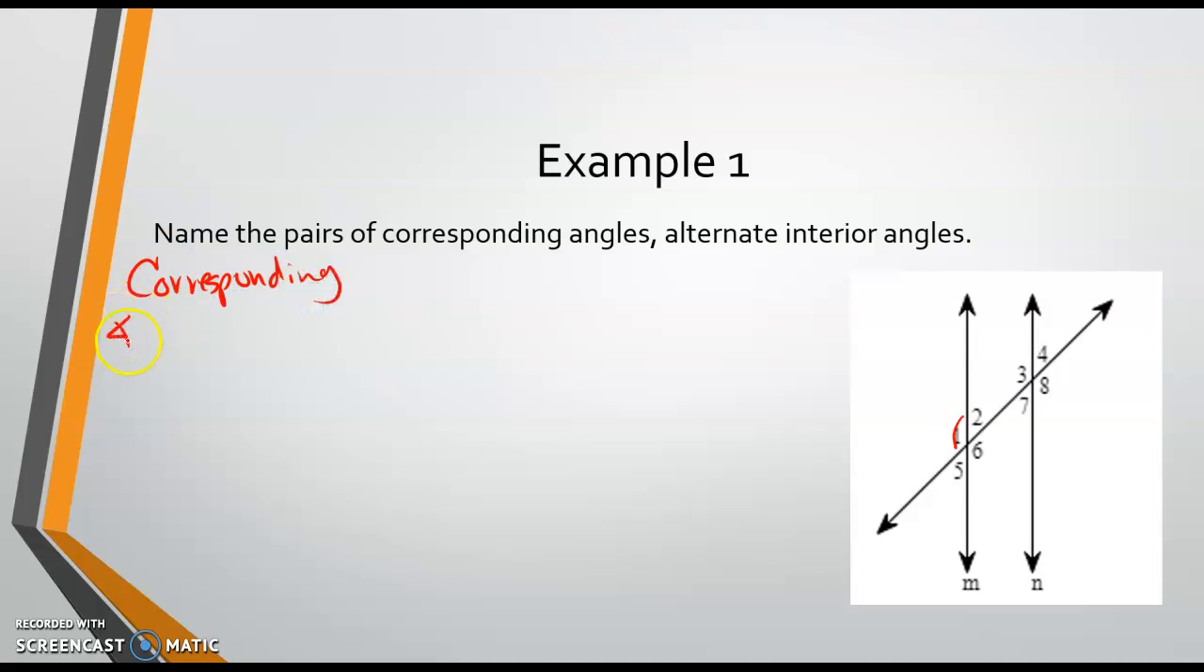I know that angle one is going to pair with angle three, because angle three is also on top of the transversal, the same side of the transversal. And it is to the left of its line, so both of these are going to be pulling an angle from each line. Corresponding is just going to be in the same position.